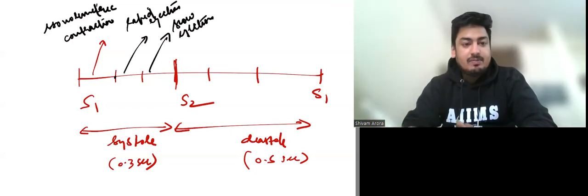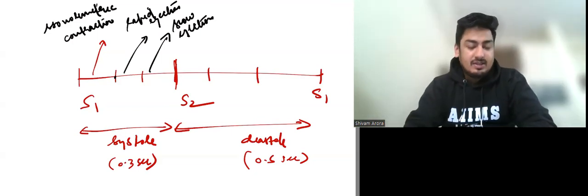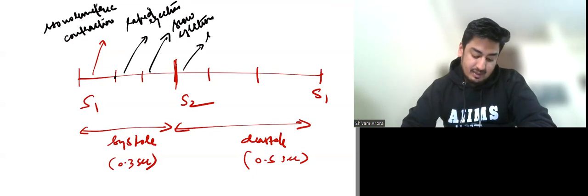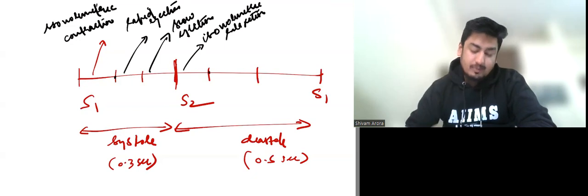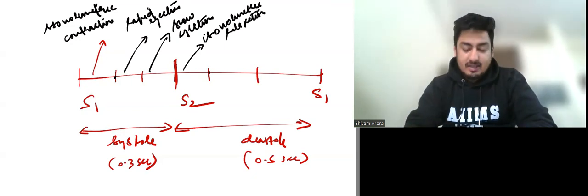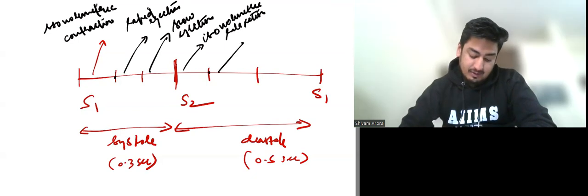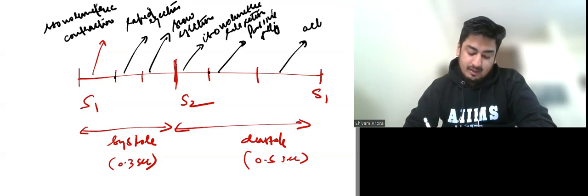Diastole also has three phases: the first is isovolumetric relaxation. Then at this point there is opening of mitral and tricuspid valves, so there is passive LV filling. After that there is a phase of active filling which is because of atrial contraction.